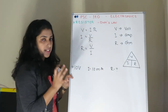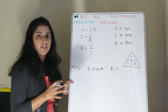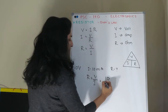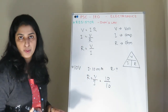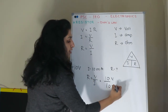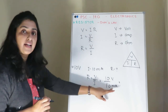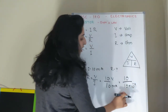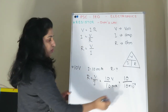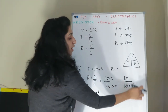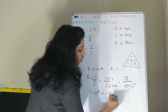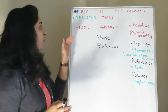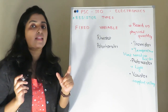Let's look at a circuit example. The voltage is 10V and the current is 10 mA. Using the equation R equals V by I: 10V divided by 10 mA, that is 10V divided by 10 into 10 raised to minus 3, which gives us 1000 ohms, or 1 kilohm.